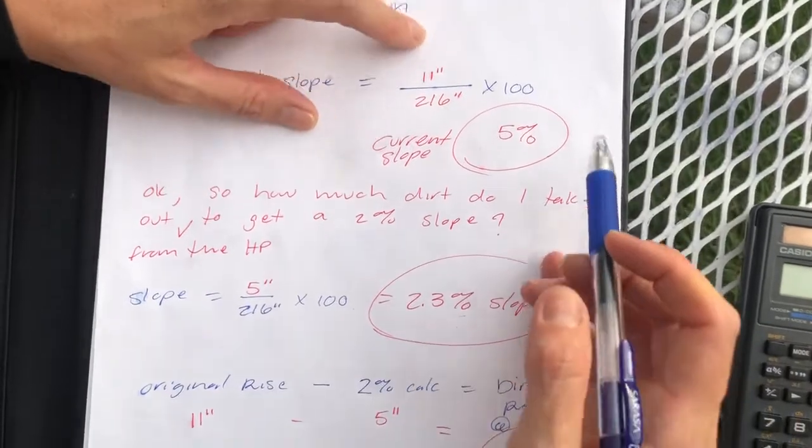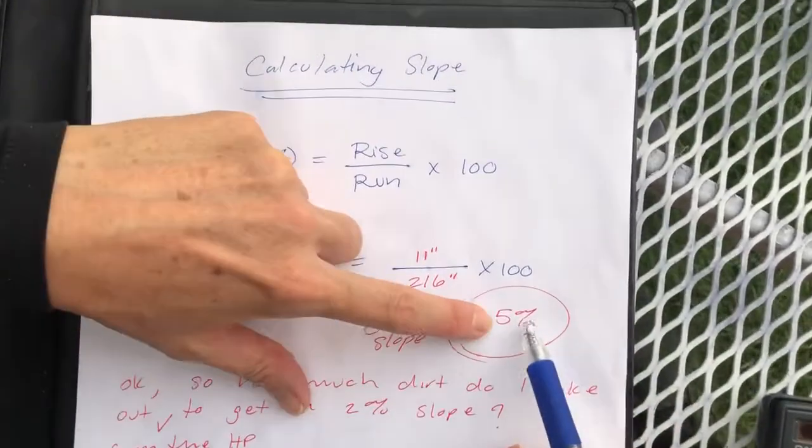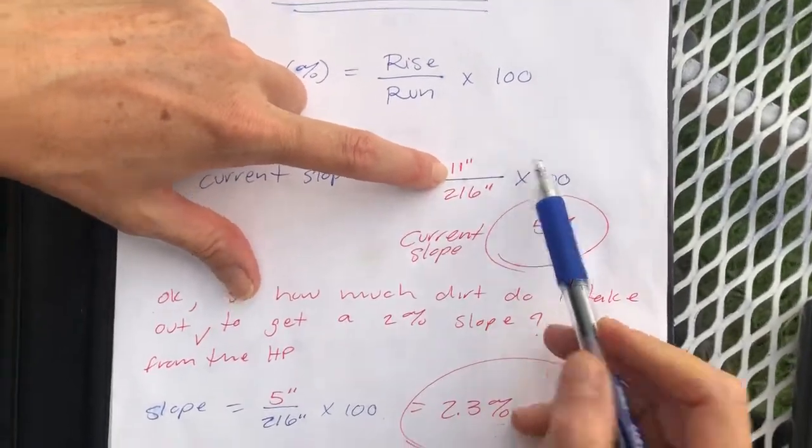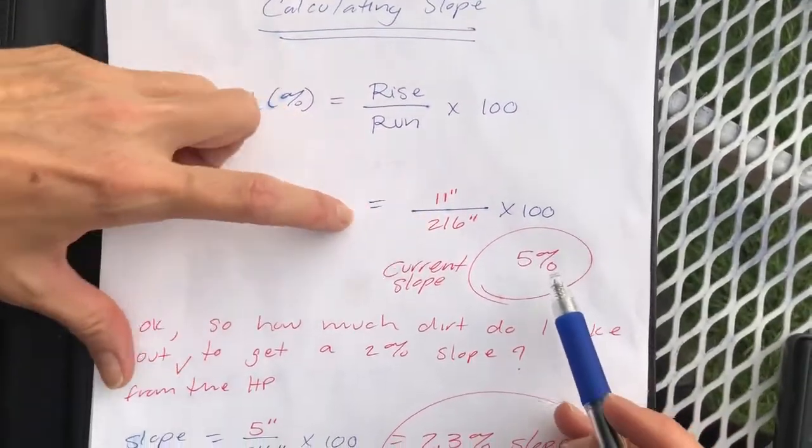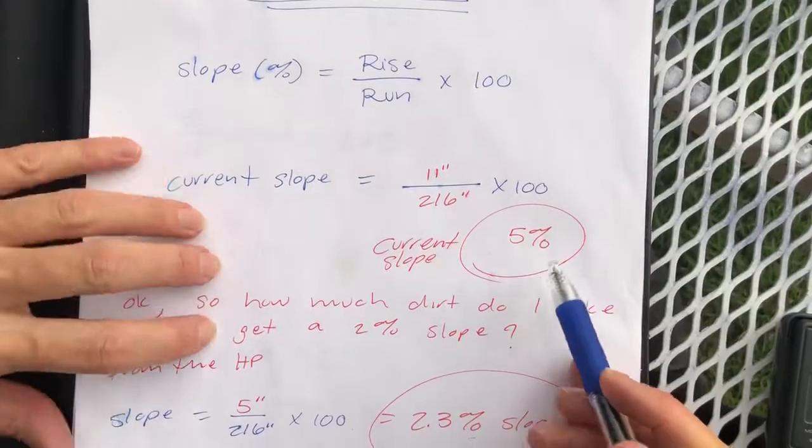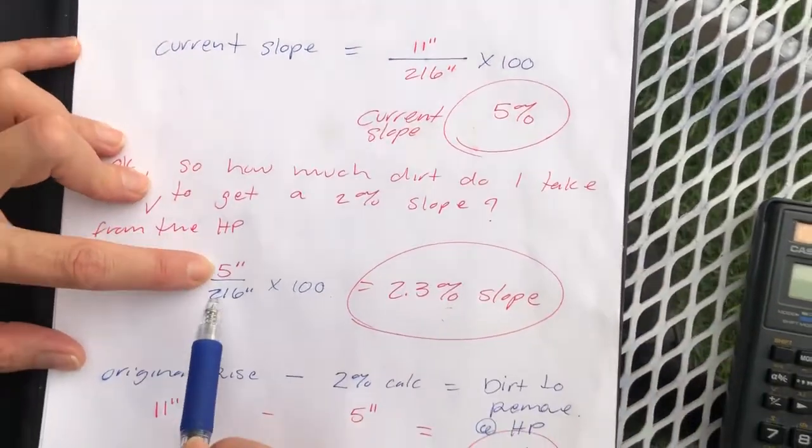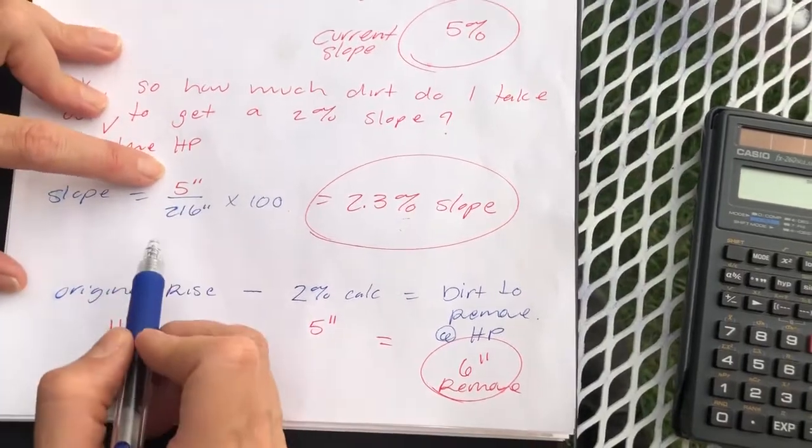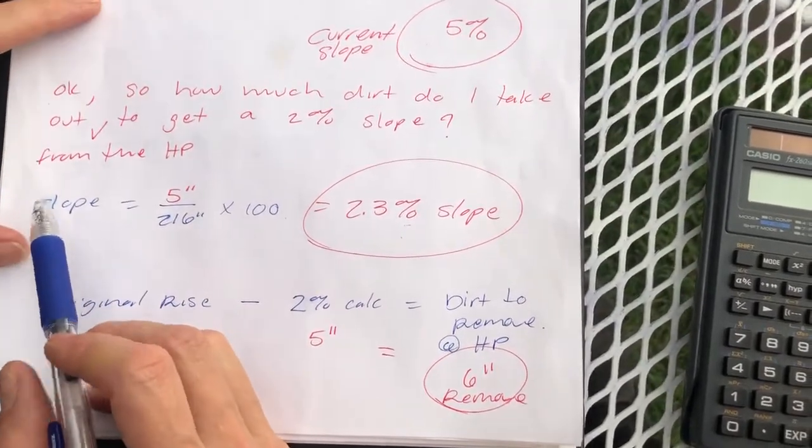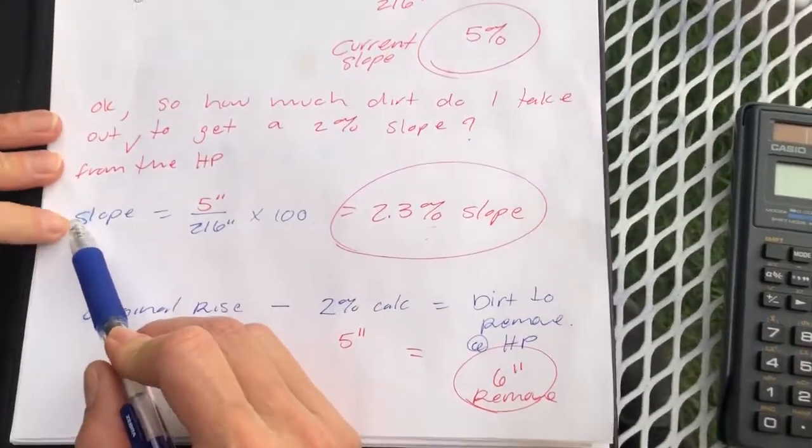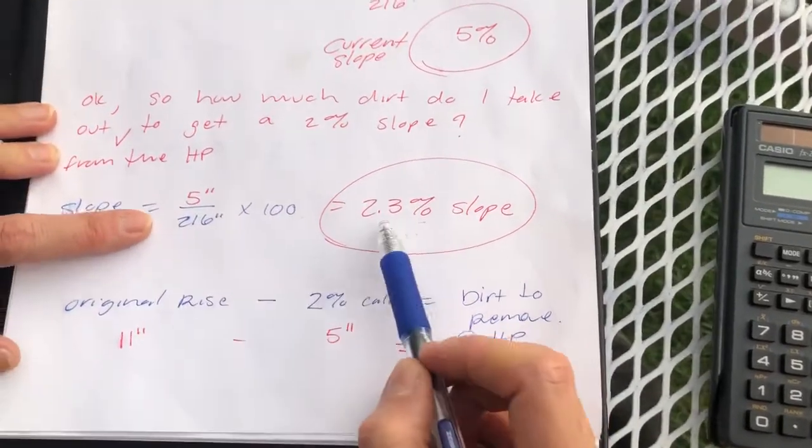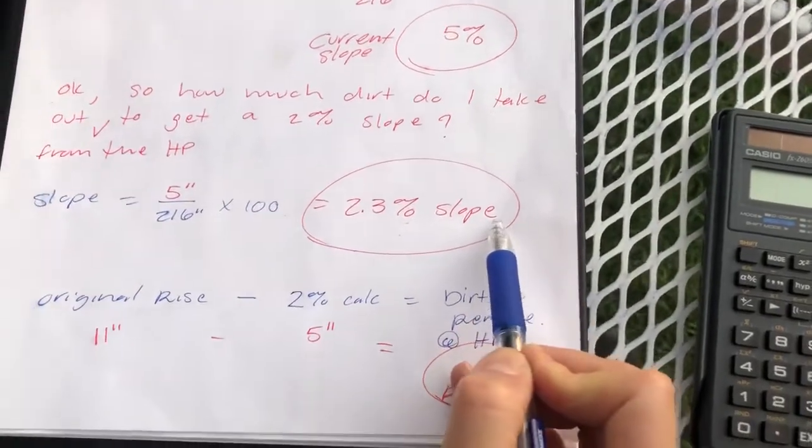I can easily tell that half of 5 is 2.5, half of 11 is 5.5, so I'm going to guess and do some experimentation using 5 inches. So our slope is 5 inches divided by 216 times 100, and that gets down to a 2.3% slope.